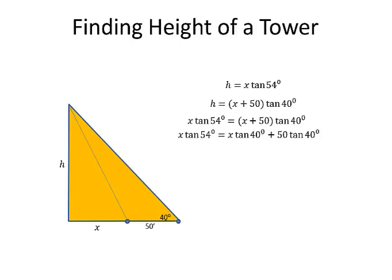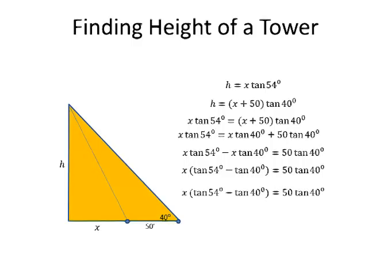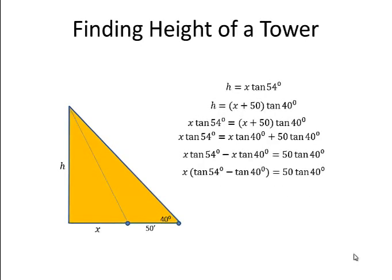Then I'll use the distributive property on the right-hand side. And then I will subtract X tangent of 40 degrees from both sides because I want all the X's on the left-hand side of the equation. Now that I have it in this form, I see I can factor out an X, and I get X times tangent of 54 minus tangent of 40 equals 50 tangent of 40 degrees. After I've factored out an X, I can divide both sides by tangent of 54 degrees minus tangent of 40 degrees.